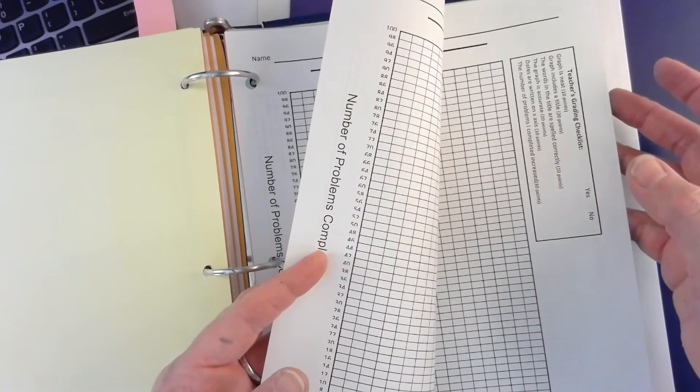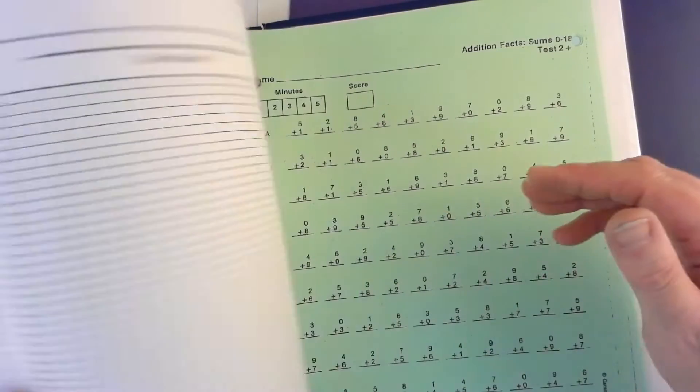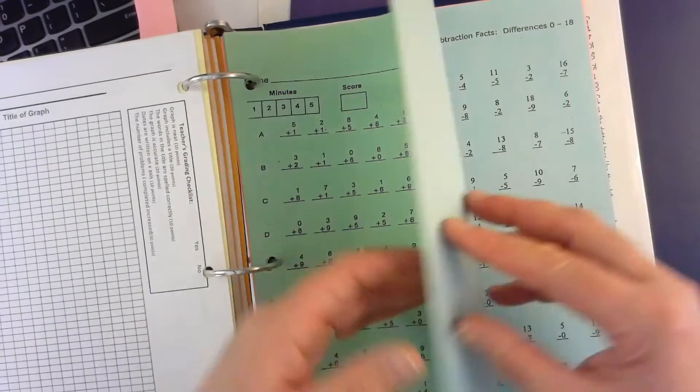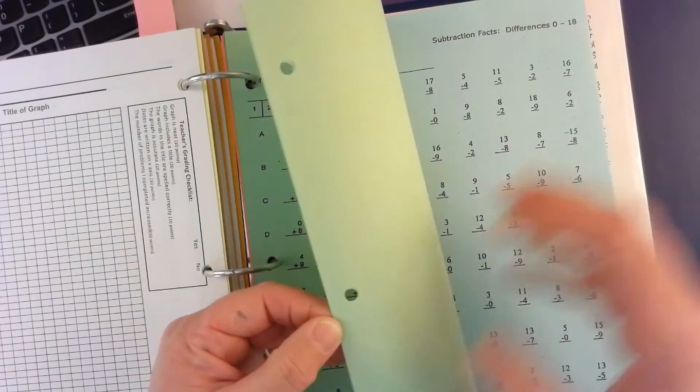There should be two pages of graphs front and back. Go ahead and flip those. Then the first one you come to is addition, it's green. The next one you'll come to, there should be about four pages here, one, two, yep there's four pages of addition.